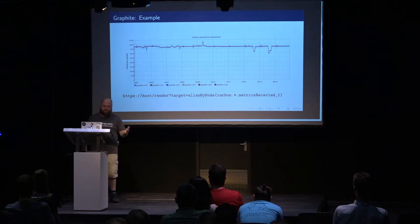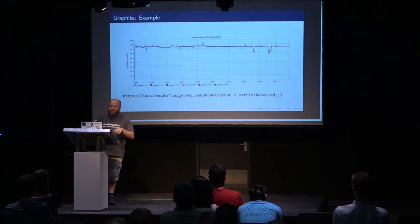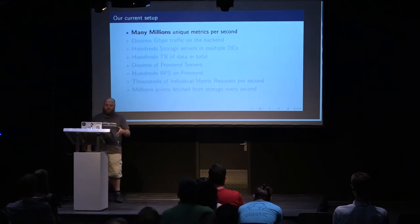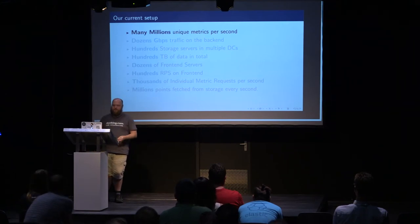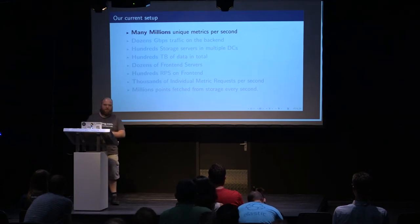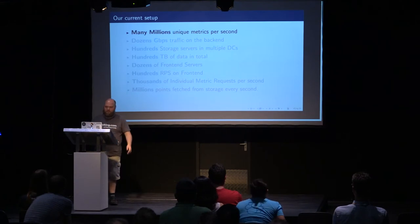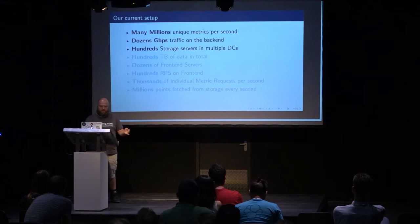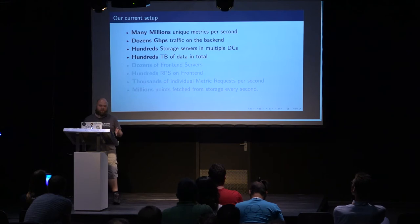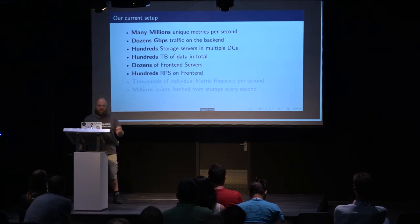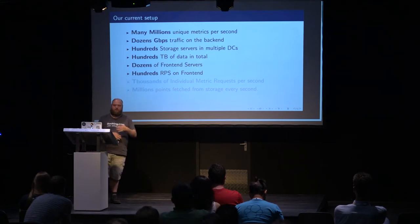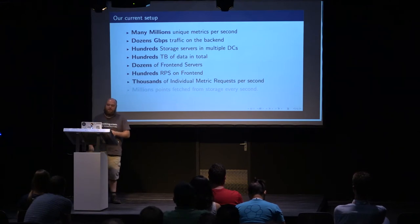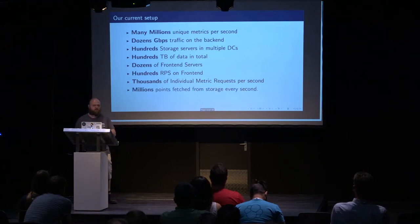As an example, if you do a query that looks like something like that, you'll get a nice graph showing — like in this example — the amount of metrics received for some bunch of servers. To feel our scale and understand why we needed to scale: at this moment we have many millions of unique metrics per second, much closer to dozens of millions of metrics per second just on ingestion. It's several gigabits of traffic on the backend, hundreds of storage servers in multiple data centers, hundreds of terabytes of data stored, dozens of frontend servers, hundreds of requests per second on the frontend, those graphs requesting thousands of metrics each second, and those metrics fetching millions of points.